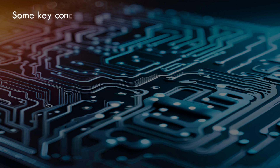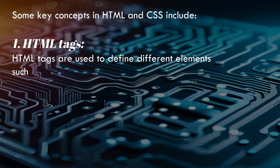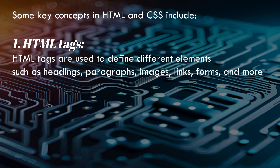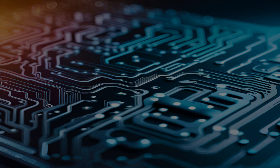Some key concepts in HTML and CSS include: 1. HTML Tags — HTML tags are used to define different elements such as headings, paragraphs, images, links, forms, and more. Tags are enclosed in angle brackets, and they define the structure and content of a web page.